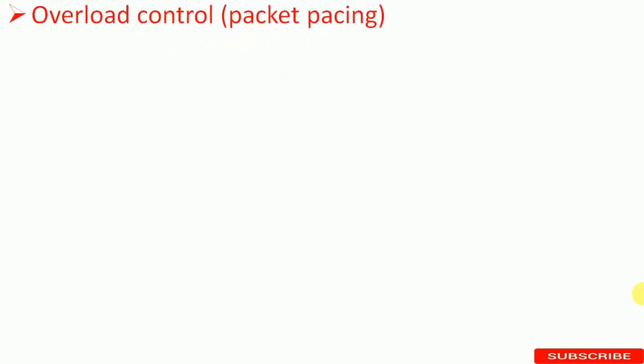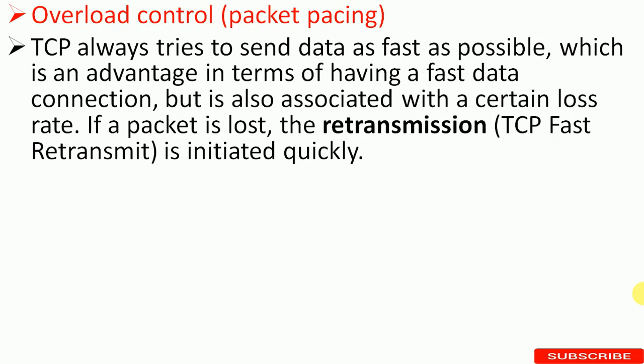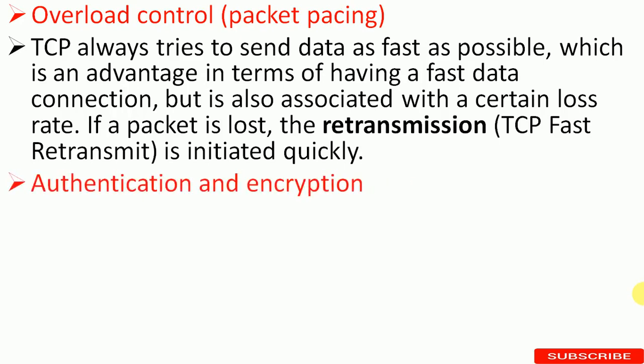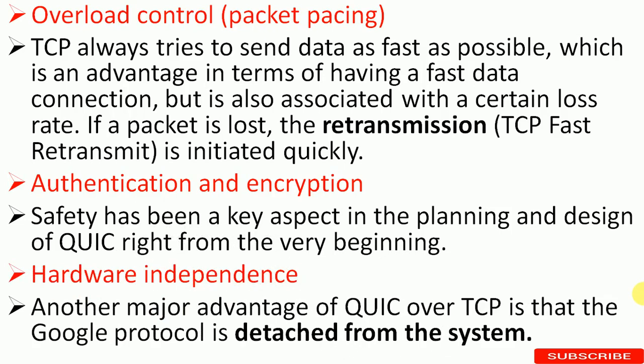The next advantage is overload control, also known as packet packing. TCP always tries to send data as fast as possible, which is an advantage for fast data connections but is associated with a certain loss rate. If a packet is lost, TCP fast retransmit handles it quickly. Next is authentication and encryption — safety has been a key aspect in the planning and design of QUIC from the very beginning. Another major advantage of QUIC over TCP is hardware independency: the Google protocol is detached from the system, meaning it can be run on any hardware configuration without being dependent on specific hardware.